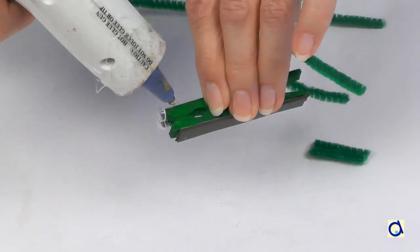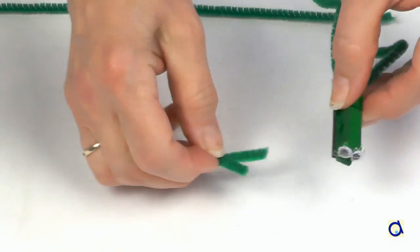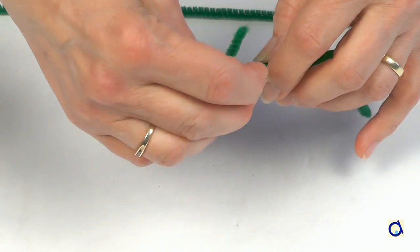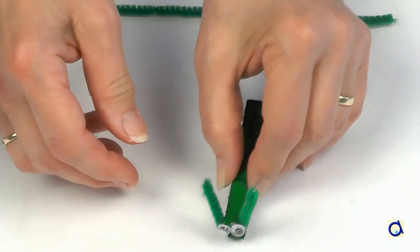Next, cut two small pieces of pipe cleaner to represent the antennas of the grasshopper. Glue the antennas on either side of the eyes.